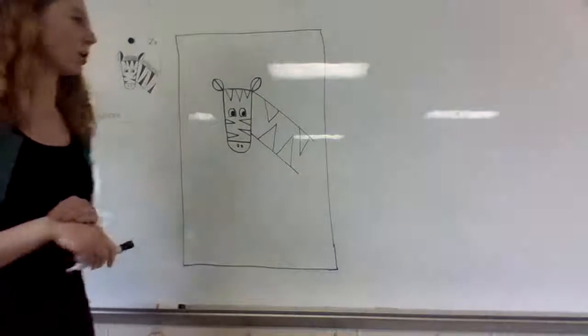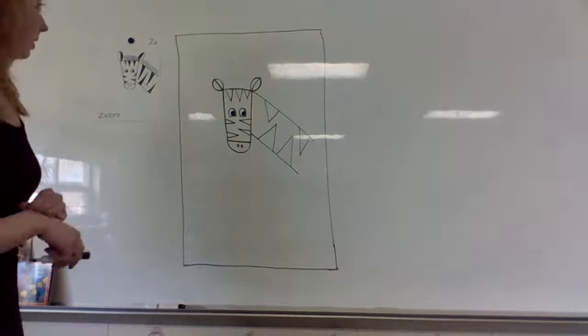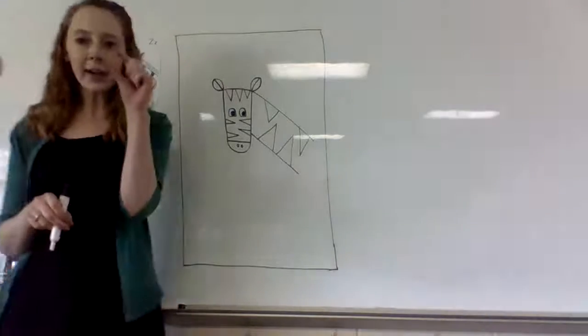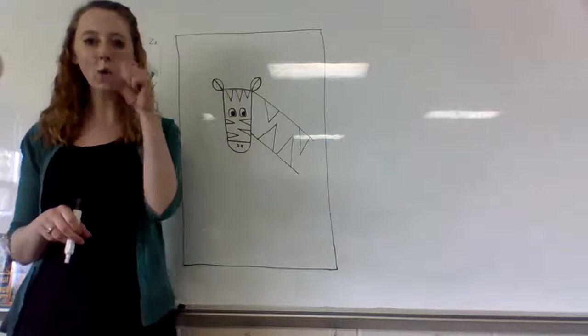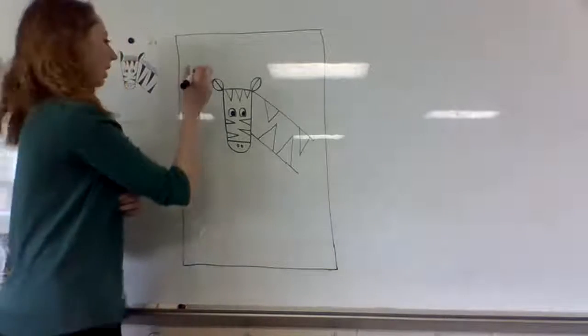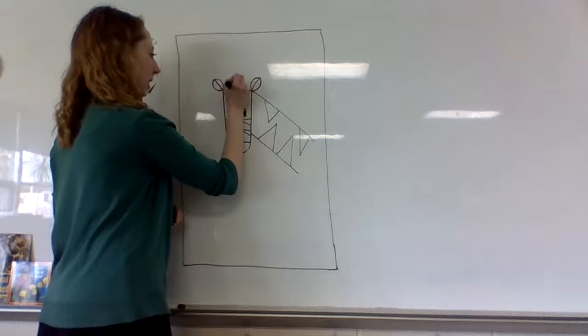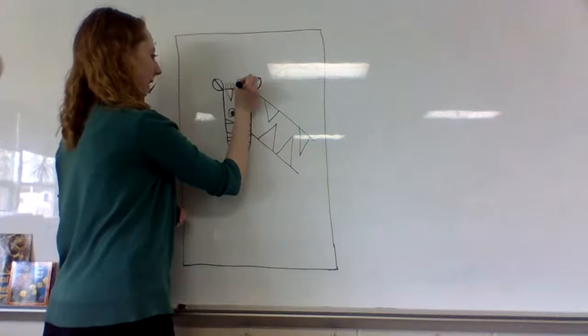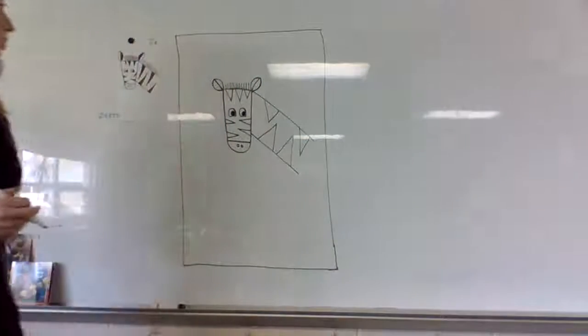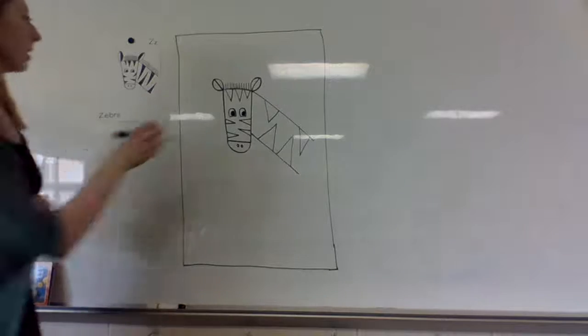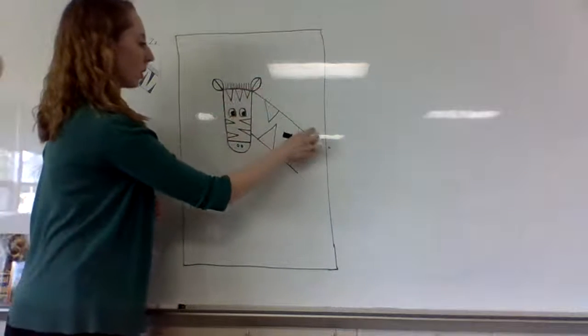Last, zebras have a very short little mane, not quite like a horse, shorter than that. To draw that, we're going to take our black crayon and just draw some nice straight lines. Not too tall, otherwise he'll just look ridiculous. So some straight lines up there on top of his head, and we're going to do the same thing kind of going down.